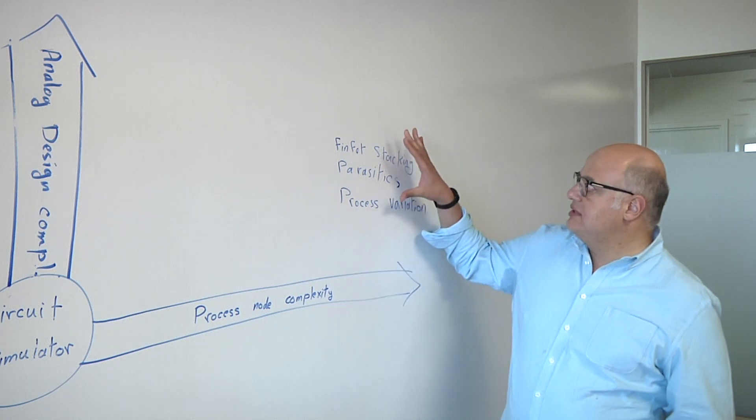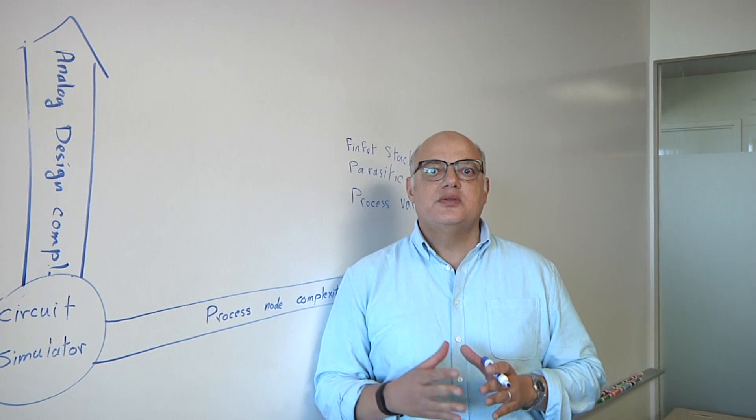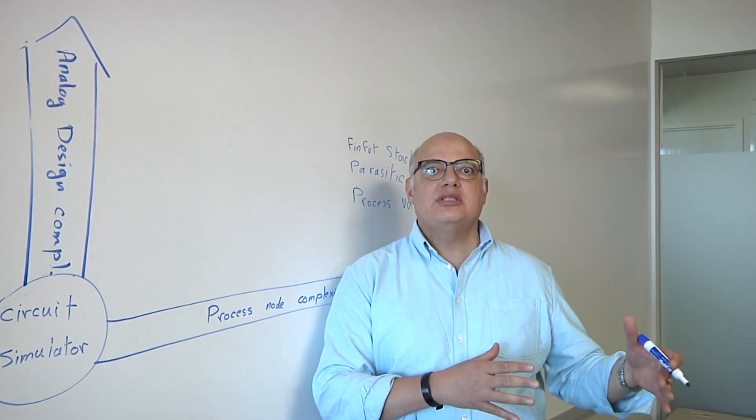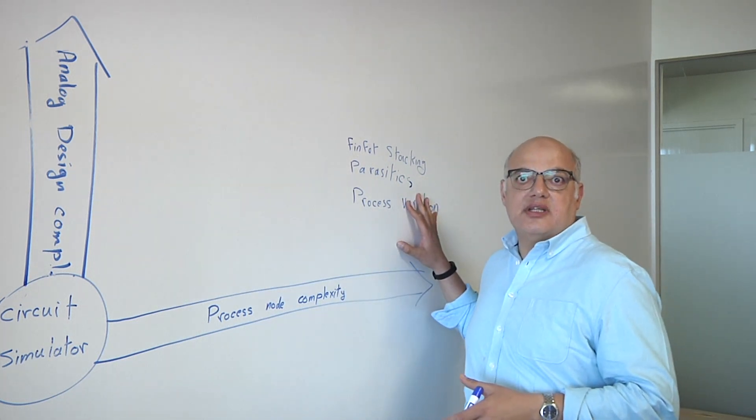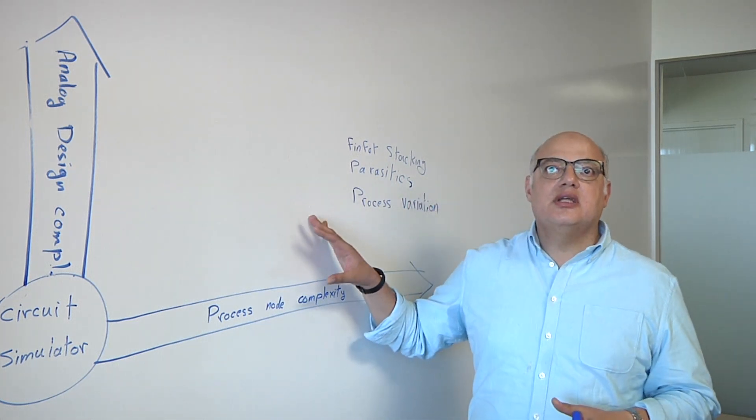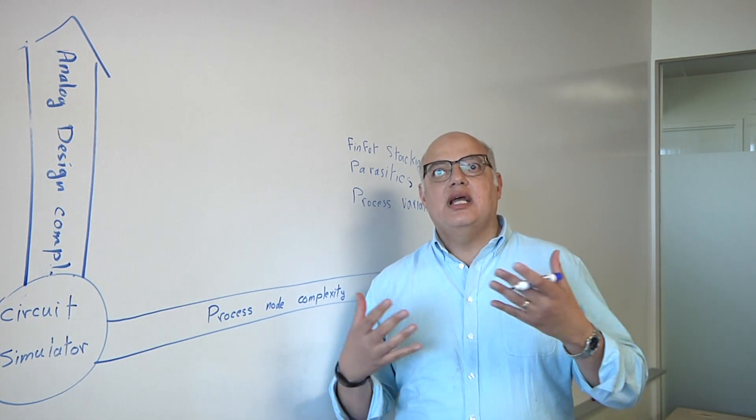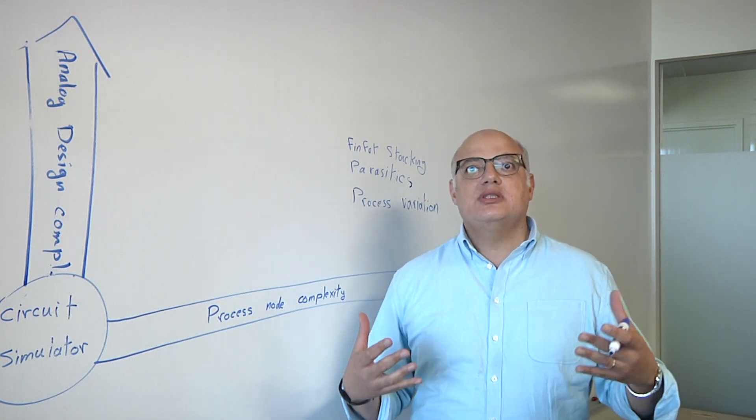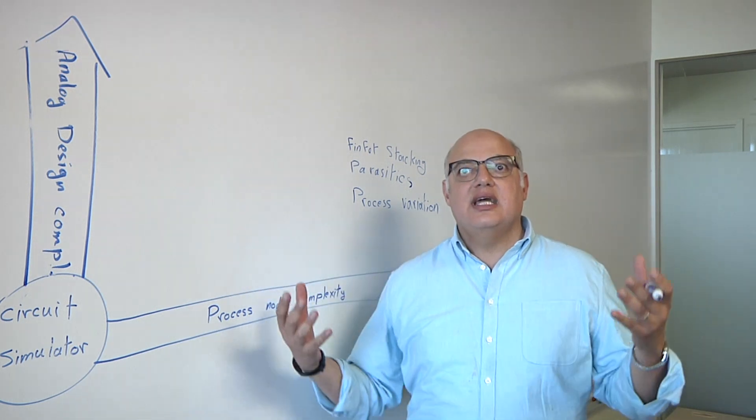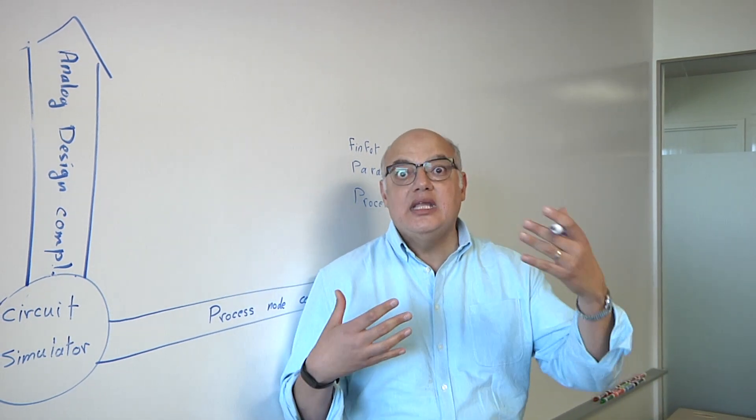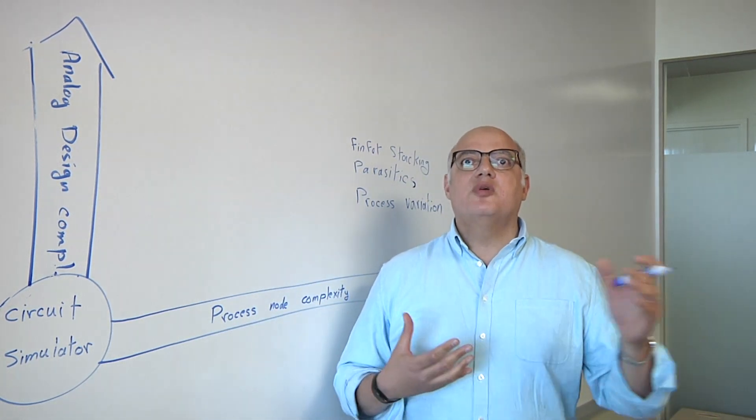What happens on the analog design side? How does that change as you move down into these advanced nodes? First, these factors change the way analog designers do their designs. Analog designers now tend to use more digital circuits in their analog. They use digital circuits to calibrate, for example, for process variation. They use digital circuits to control the analog designs. They would replace parts of the analog circuits with digital. And, of course, the more digital circuits you have in your design, the size of the design increases. And the speed, the rate of the simulation would increase, making simulation even more complex.